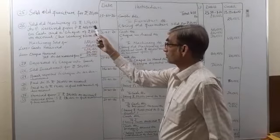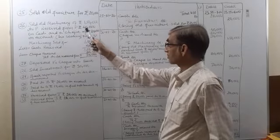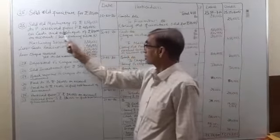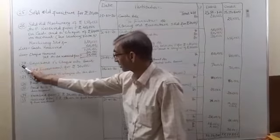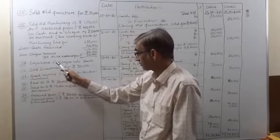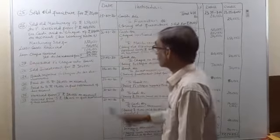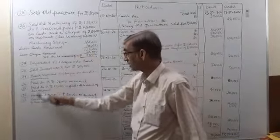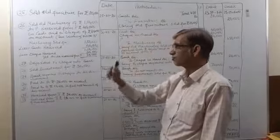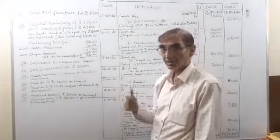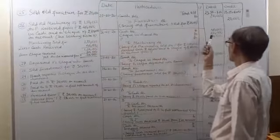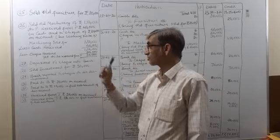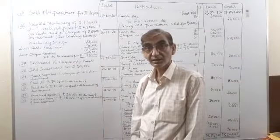For transaction 26: old machinery sold to P for rupees 1,50,000. Cash account debit rupees 40,000 (cash received). Cheque-in-hand account debit rupees 80,000 (since the cheque is deposited on a different date, next transaction). P's account debit rupees 30,000 (P is our debtor for the remaining amount). To machinery account credit rupees 1,50,000. Narration: being old machinery sold to P for rupees 1,50,000, received cash rupees 40,000 and a cheque of rupees 80,000, on account from P.